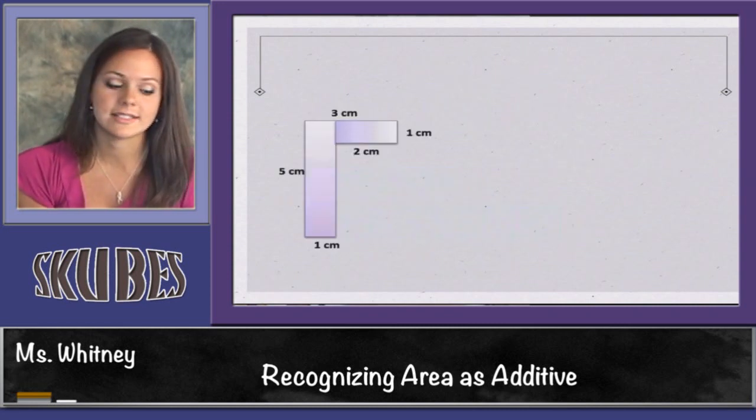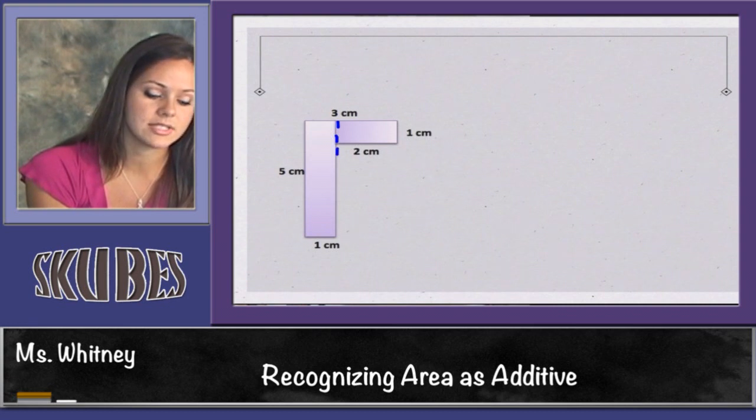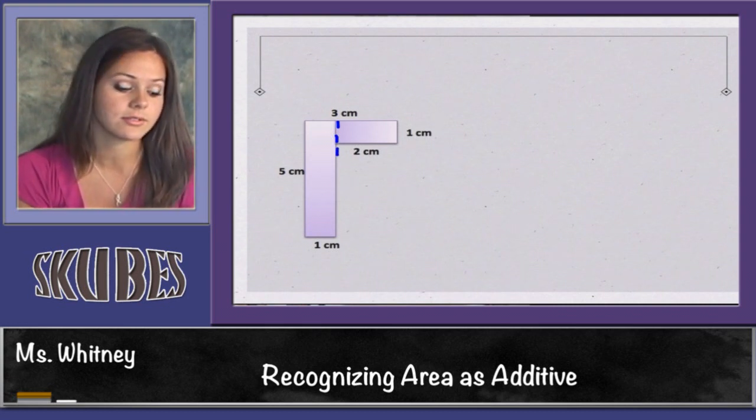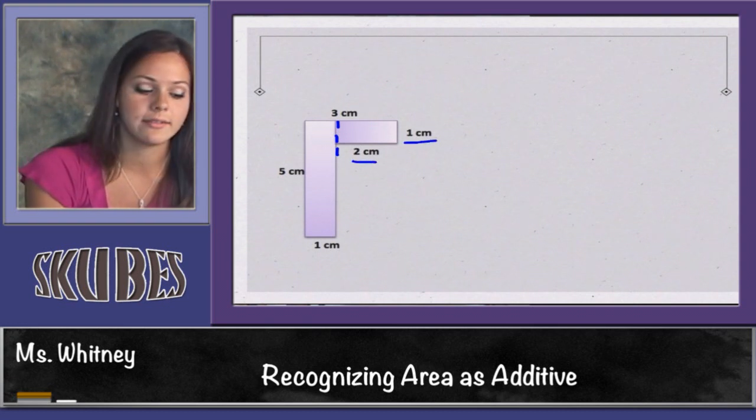And here's our last example. I'll first start by dividing it into two separate shapes or separate rectangles. I'll multiply 2 times 1 to find the area of my first shape.